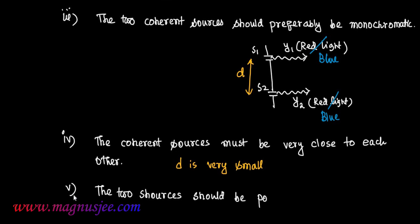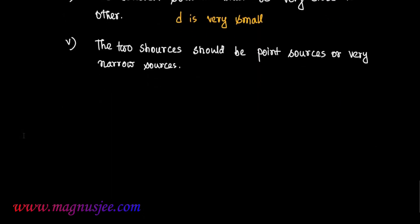The fifth condition: the two sources should be point sources or very narrow sources.